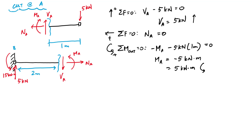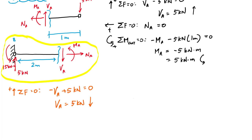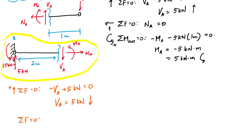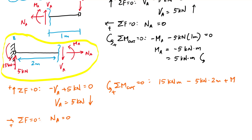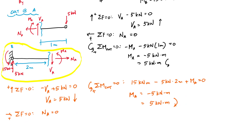If I choose the left side of the cut, I include the support reactions and assume internally positive: shear VA pointing down, moment MA, and NA away. Applying equilibrium: negative VA plus five kilonewtons equals zero, so VA is five kilonewtons pointing down. The normal force NA is zero. Taking moments about the cut: 15 kilonewton-meters minus five kilonewtons times two meters plus MA equals zero, giving MA equals negative five kilonewton-meters. Notice the shear and moment from the right and left sides are equal and opposite.